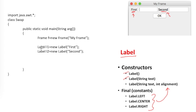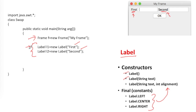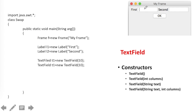Here I have taken two labels: Label l1 and Label l2. When l1 is created I am setting its text to 'First', and l2 is set to 'Second'. So now I have three things: a frame and two labels.